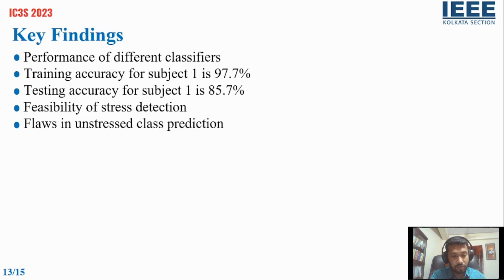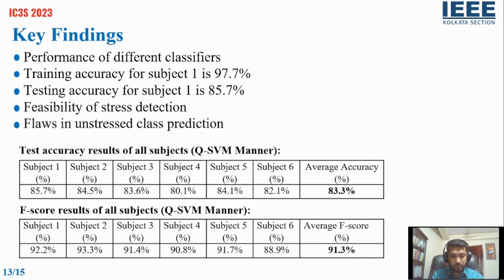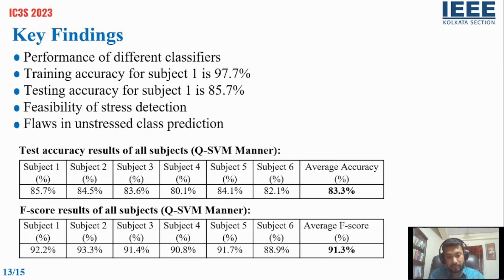These are the key findings of our research. The key findings include the performance of different classifiers: training accuracy for subject 1 is 97.7%, and testing accuracy for subject 1 is 85.7%. We also assessed the feasibility of stress detection and noted flaws in non-stressed class prediction. The table shows the test accuracy results for all six subjects. The average accuracy is 83.7% and the average F1 score measurement is 91.3%.